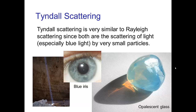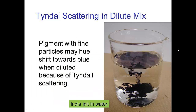A very similar type of scattering is called Tyndall scattering. This is also scattering by very small particles, and so it is bluish. We see that in some materials like opalescent glass. The blue iris is actually a result of Tyndall scattering by very small particles — there isn't a blue pigment, it's Tyndall scattering. Tyndall blue is this characteristic color. We also see this in a very dilute mixture of very fine particles, like India ink, which has a bluish tint when diluted, even though in denser form it's black from absorption.